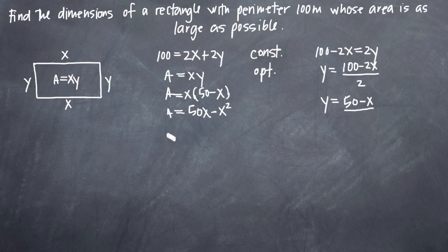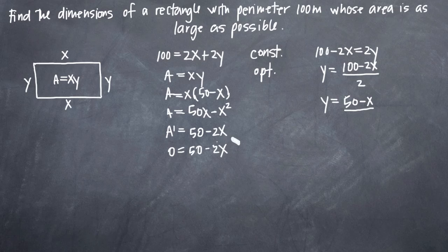So now we want to take the derivative. We'll call the derivative A prime, and when we take the derivative, we'll get 50 minus 2x. Now that we have the derivative function, and it's as simple as it can be, we can go ahead and set this equal to 0 and solve for x. So 0 equals 50 minus 2x. If we add 2x to both sides, we'll get 2x equals 50. And if we divide both sides by 2, we'll get x equals 25.